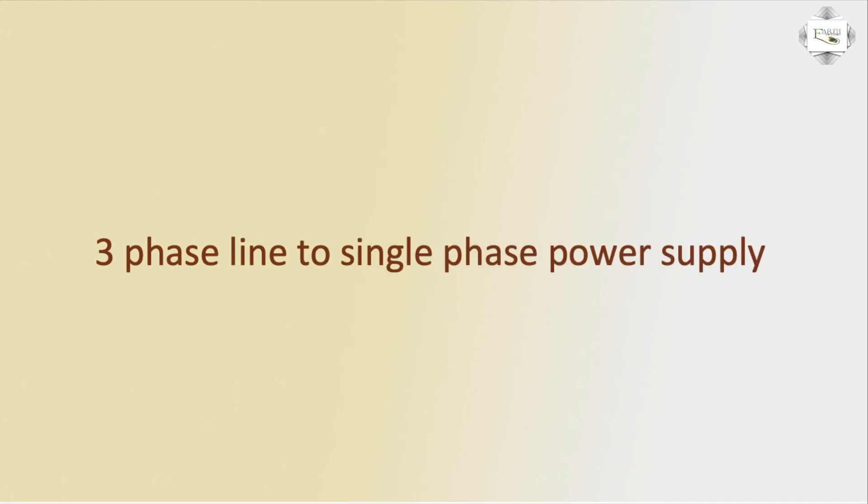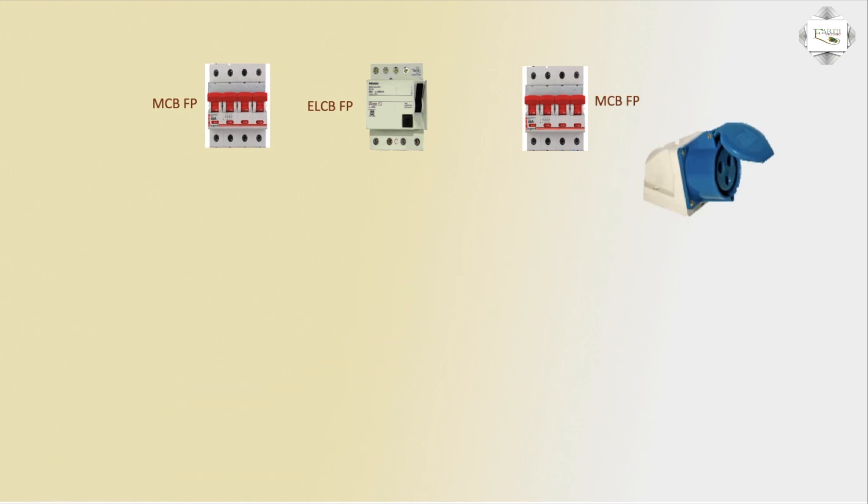Hello viewers, today I discuss the three-phase line to single-phase power supply. The components used are: a four-pole MCB (FP means four-pole circuit breaker), an ELCB four-pole circuit breaker, and a three-phase line outlet socket.